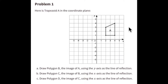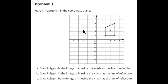In Problem No. 1, you are to take Trapezoid A and reflect it three times: the first time over the y-axis, the second time over the x-axis, and the third time back over the x-axis in the opposite direction. Part A says draw polygon B, the image of A, using the y-axis as the line of reflection.